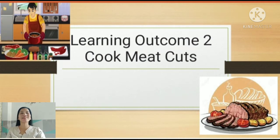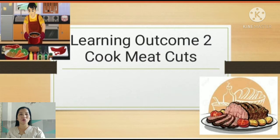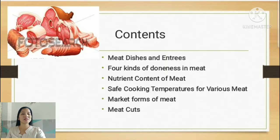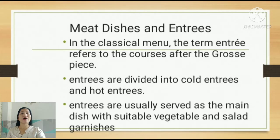Hello everyone, this is Ma'am Odeline and welcome to Grade 10 TLE Cooking Class. In this video lesson I am going to discuss learning outcome number two: cook meat cuts, under the learning competency 'prepare and cook meat.' The most essential learning competencies are: first, identify the market forms and cut up meat; and second, prepare meat cuts according to the given recipe. The contents include meat dishes and entrées, the four kinds of doneness in meat, the nutrient content of meat, safe cooking temperatures for various meats, market forms of meat, and meat cuts.